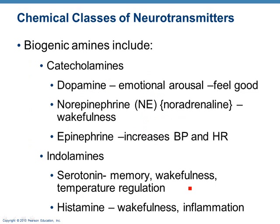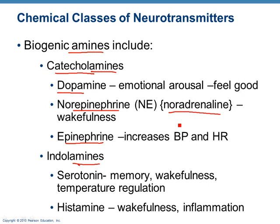We have some neurotransmitters called the amines — they have the prefix 'amine.' There are catecholamines and indolamines. Your main catecholamines are dopamine, norepinephrine, and epinephrine. You may have seen the words noradrenaline or adrenaline: noradrenaline and norepinephrine are the same thing, and epinephrine and adrenaline are the same thing. We usually use norepinephrine and epinephrine in anatomy and physiology.